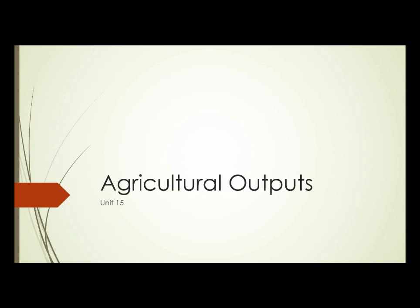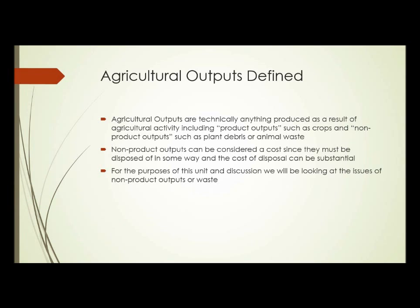Unit 15: Agricultural Outputs. What are agricultural outputs? If you remember, way back at the beginning of this course, we had a unit on agricultural inputs — anything added to or brought in to help the production of whatever was being produced, whether it was crops or animals. Outputs are the result of agricultural activity.